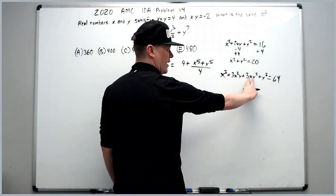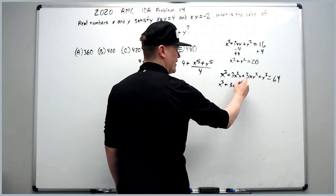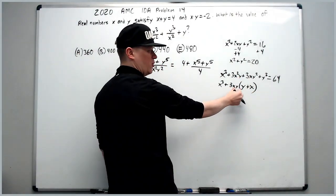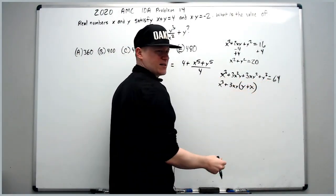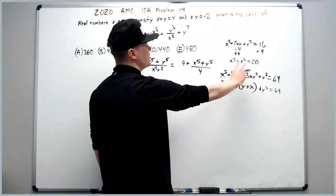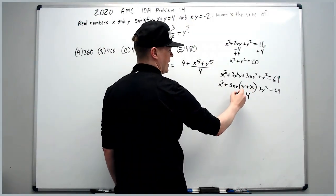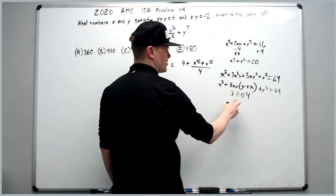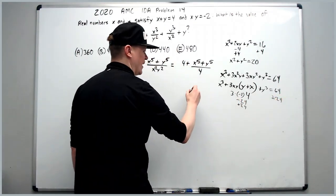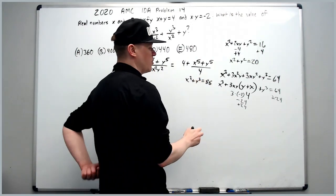We group 3x squared y and 3xy squared as 3xy times (x plus y). Since y plus x is 4 and xy is negative 2, we get 3 times negative 2 times 4 equals negative 24. Adding 24 to both sides, x cubed plus y cubed equals 88.